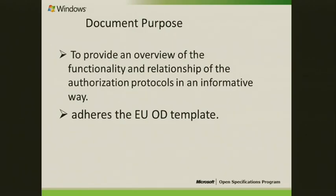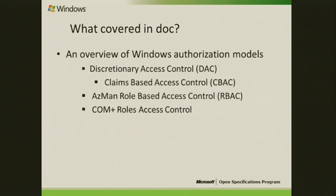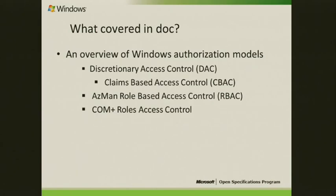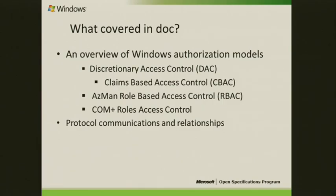The purpose of this document is to provide an overview of the functionality and relations of the authorization protocols in an informative way. We have a well-defined overview template and this document adheres to that template. This document primarily covers various authorization models that exist in Windows: the discretionary access control model, a claims-based access control model, RBAC which is the authorization manager based model, and a complex rules access control model. CBAC is the extension to the existing Windows authorization model.